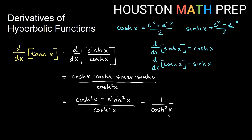If you don't believe us, you can check out the last video about working with identities. Since this is 1 over cosh x squared, we can think of this as the reciprocal of cosh squared, also known as hyperbolic secant squared. So we get, as we might have expected with hyperbolic tangent, hyperbolic secant squared of x.